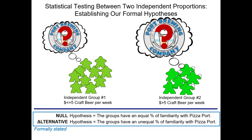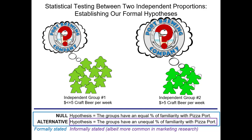This is a formal articulation of the null and alternative hypothesis. Unfortunately, especially in marketing research, hypotheses are often stated more informally — someone might simply say 'the groups have an unequal percentage of familiarity with Pizza Port,' which is really just articulating the alternative hypothesis and assuming the reader understands the null. It's very common in marketing research reports, but if you're new to the field you need to be able to identify when hypotheses are informally stated so you can properly interpret both the null and alternative.